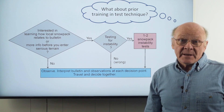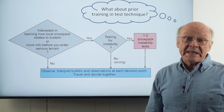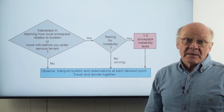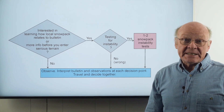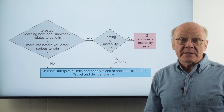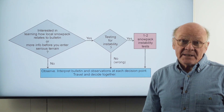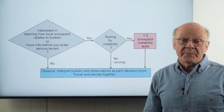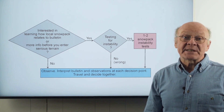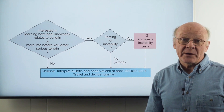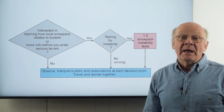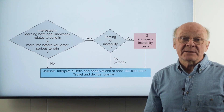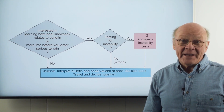Have Doug and I missed something? What if you're not trained in how to do the ECT or other instability test? First, in the next few minutes, Doug is going to demonstrate the ECT and explain how to interpret it — that is a start on training. Second, if you're strictly using instability tests to avoid more serious slopes, then errors in site selection or test technique are unlikely to increase the severity of the consequences. Every time you dig and test, you'll be learning about the snowpack and how it relates to the bulletin. Okay, over to Doug.